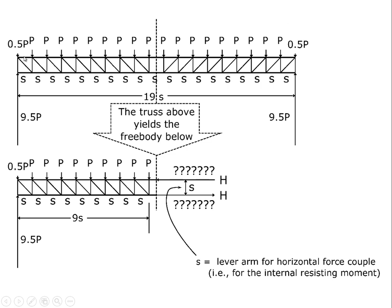We imagine that whatever uniform load exists between two points amounts to a total force of P — half a P goes to one joint and half a P to the adjacent joint. All the distributed load between two points gets divided equally between those joints. So each interior joint gets a half-P from the bay on each side, giving a one-P force on each interior joint and only a half-P force on the end joints. This is a 19-bay truss, so there are 18 one-P forces and two half-P forces for a total of 19P downward.